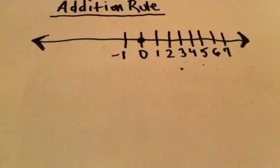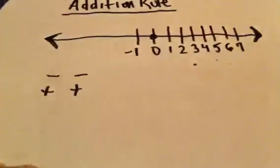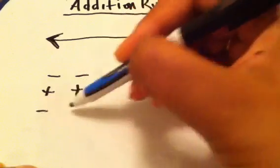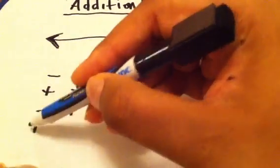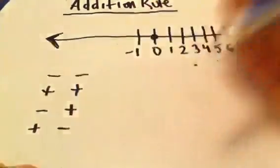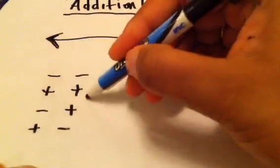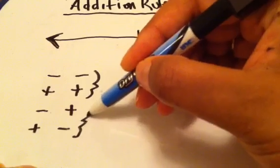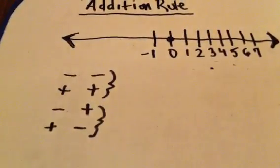We're going to start with addition. There are basically two rules. You have negative numbers and positive numbers, which are what we call like signs, and then you have numbers with unlike signs — one number will be negative, the other will be positive. So you have an addition rule for dealing with like signs and an addition rule for dealing with unlike signs.